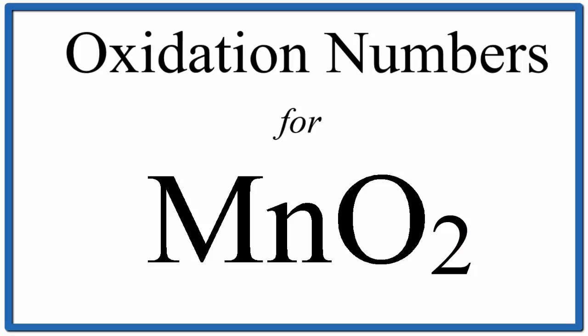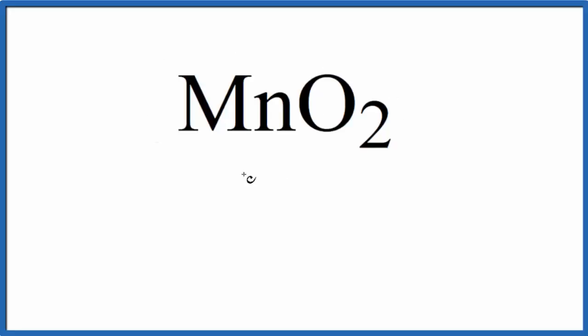To find the oxidation number for Mn, the manganese, in MnO2, we know that these are all going to add up to be zero because there's no negative or positive charge. So it's not an ion. Everything's going to equal zero.